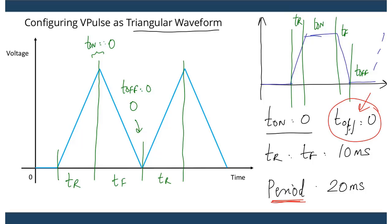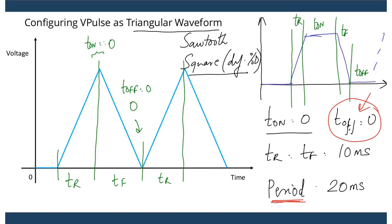These are just a few examples of waveforms you can generate by setting various values for the parameters of a pulse waveform. Other examples include the sawtooth waveform, or square waveforms with different duty cycles. In this lecture, we saw what a pulse waveform is, understood the various parameters relating to it, saw how these parameters affect each other and the calculations involved, and finally saw how assigning different values creates commonly used waveforms like the square waveform or the triangular waveform. Thank you.